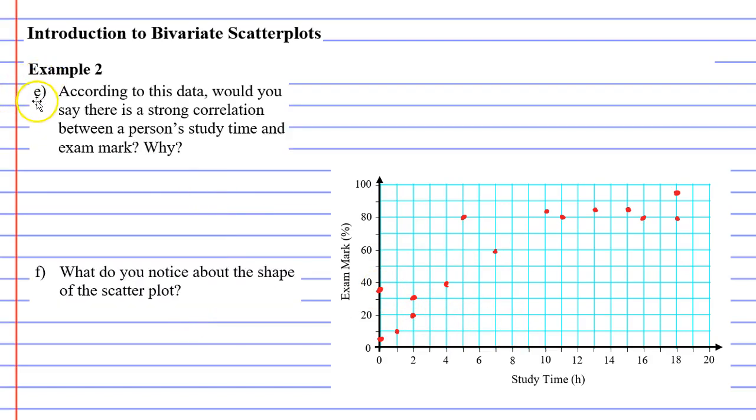We'll now move on to question E. According to this data, would you say there is a strong correlation between a person's study time and exam mark? Why? When we look at our scatter plot, we can see that there is a definite trend going on here.